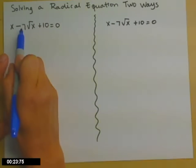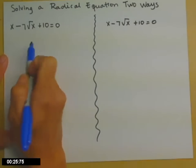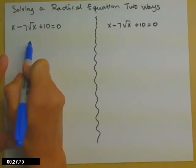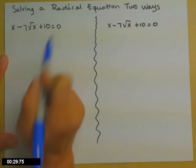The way we used to do it is we would isolate the radical term. So that's this negative 7 square root x. I'll add that to both sides.